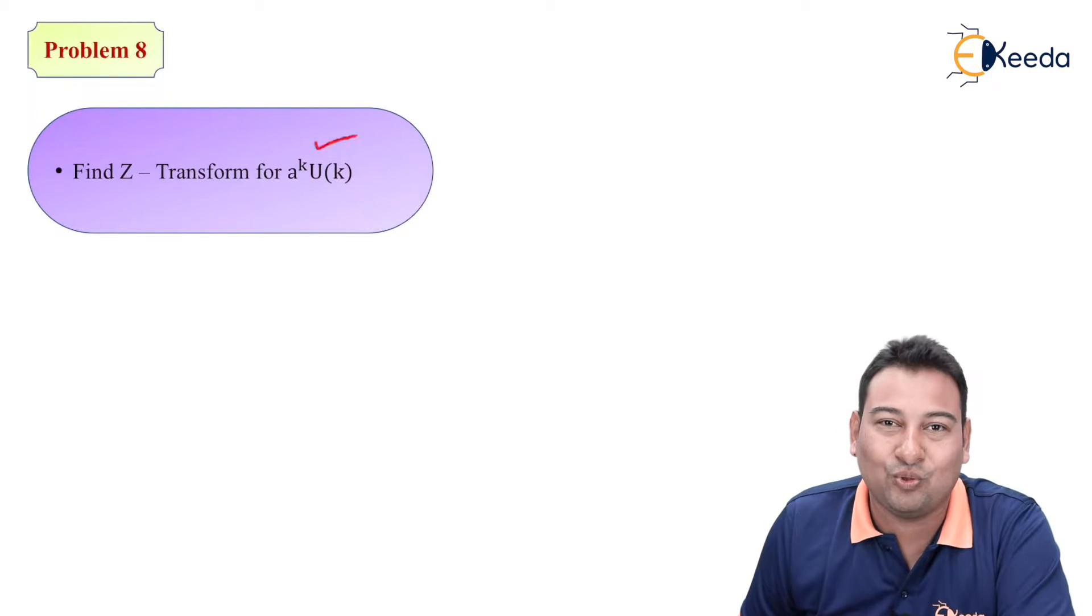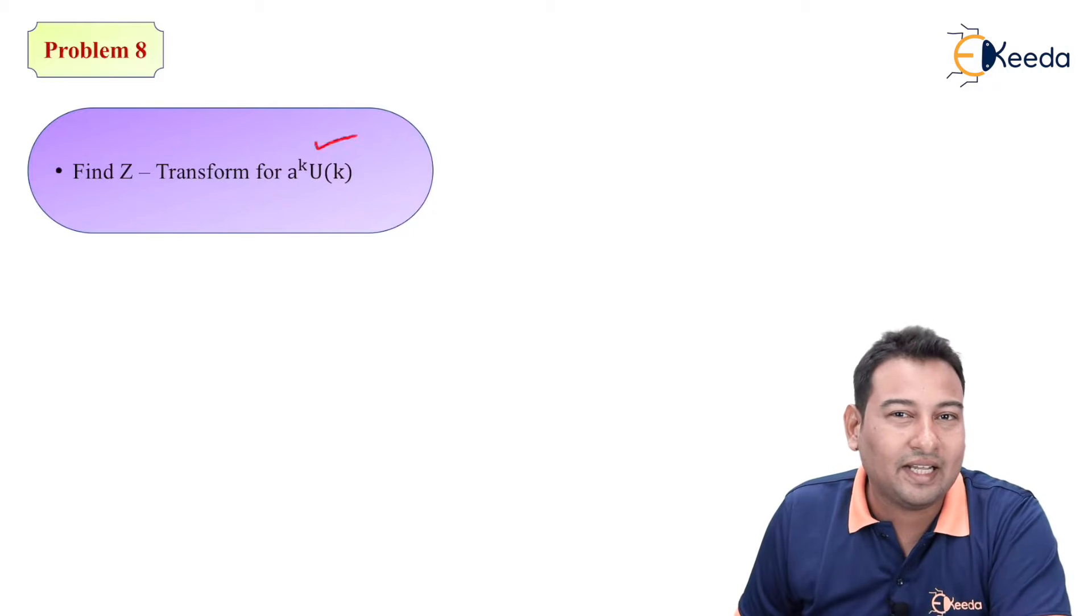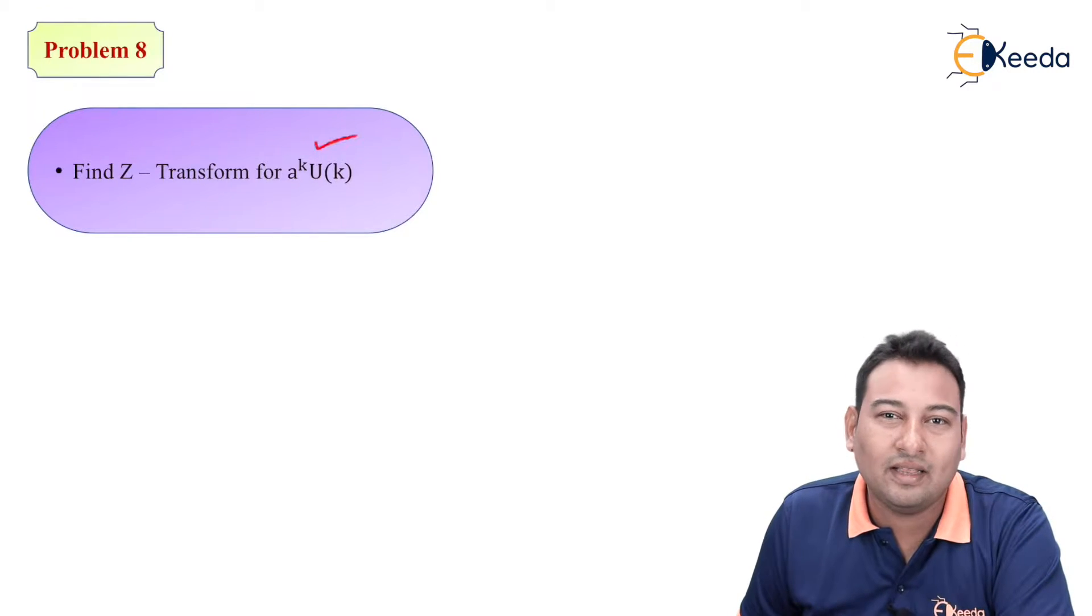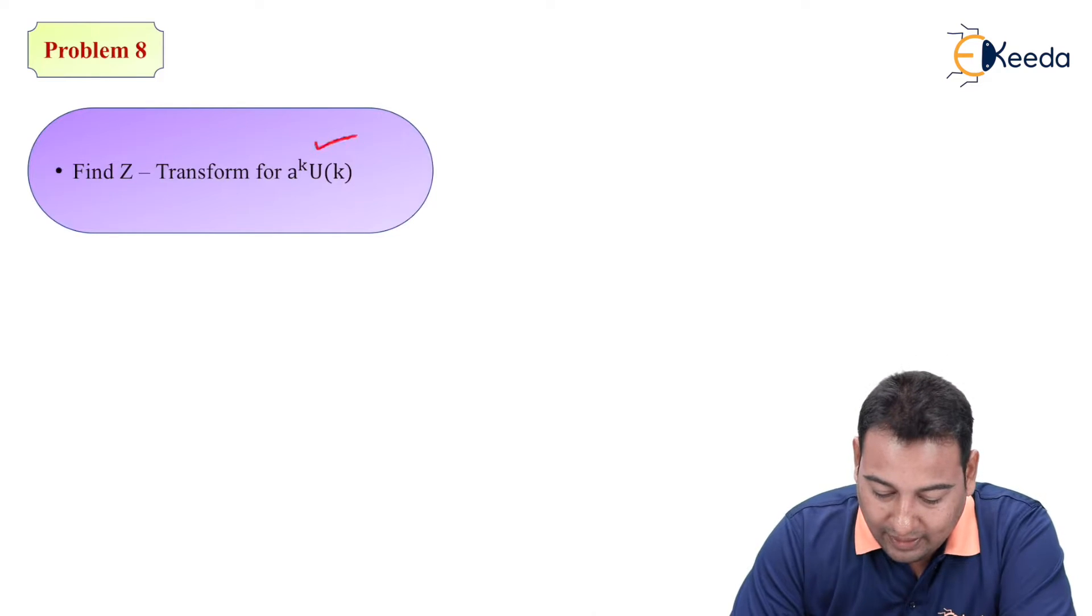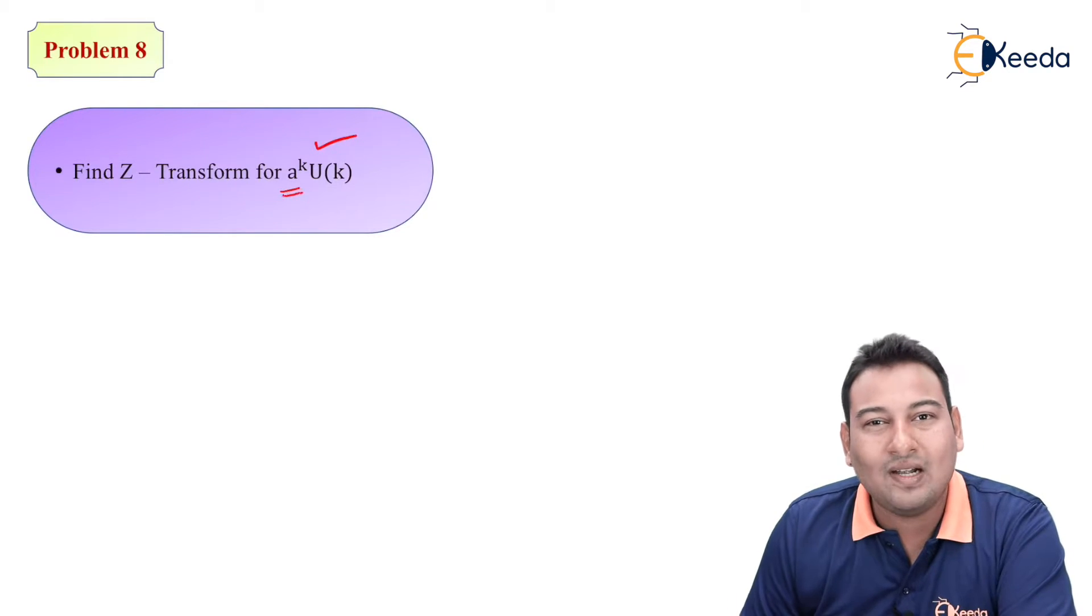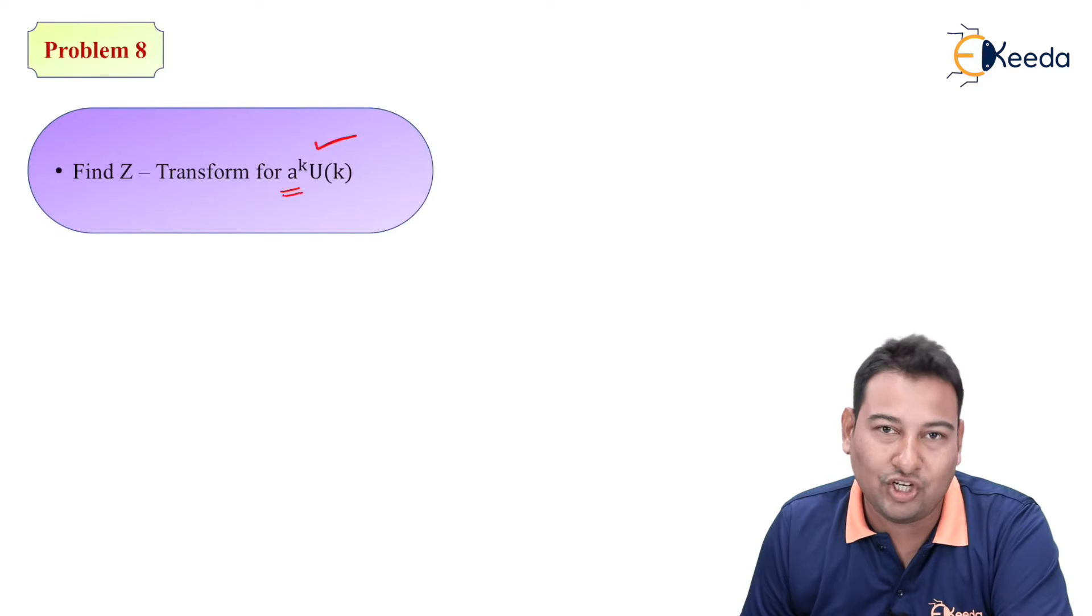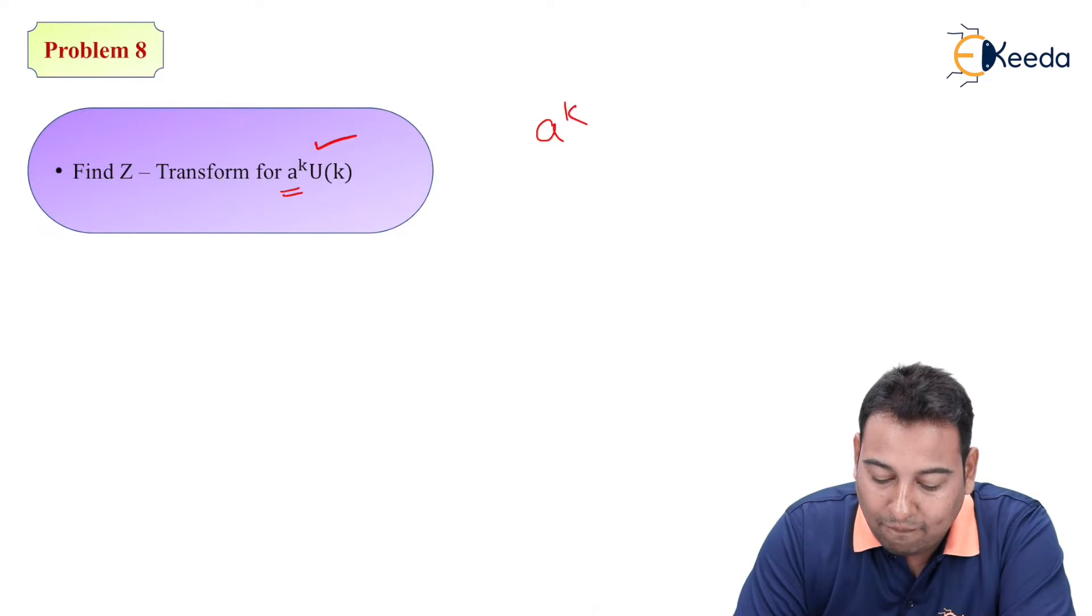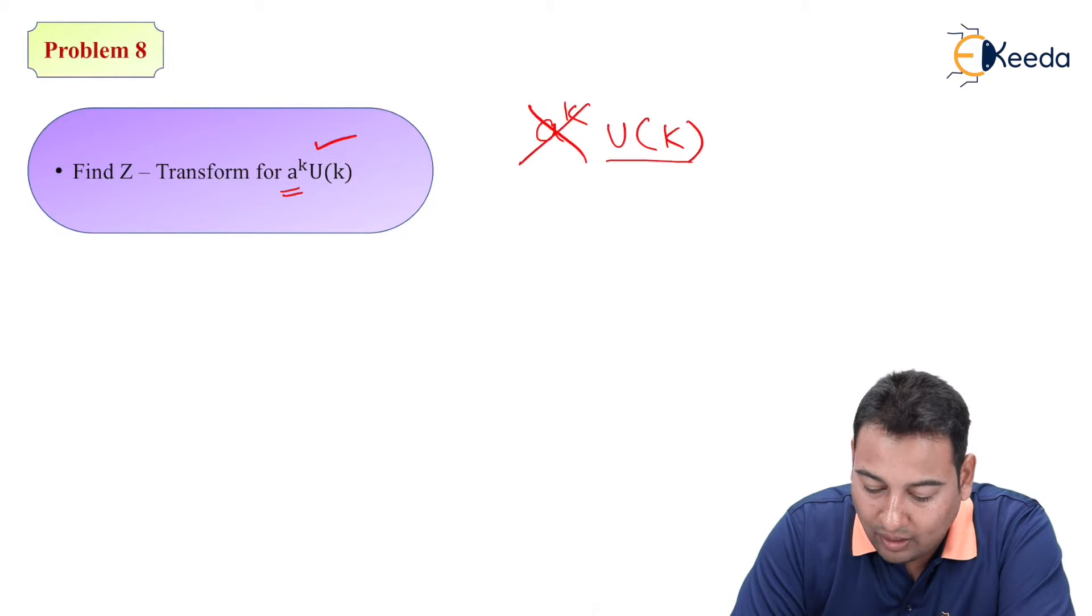Here we need to find out z-transform of a raise to k into u(k). So remember the technique: first of all, try to identify the property in the given problem. Here a raise to k is there, so what does this a raise to k indicate? Which property? Change of scale.